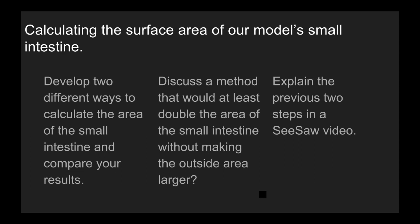Then discuss with your group a method that would at least double the area of the small intestine — in other words, how do you get the inside of the small intestine bigger without making the outside bigger, without growing more small intestine? You're going to take those insights and explain them in a Seesaw video; the link is on Classroom. Only one person in your group needs to submit the video, and the rest of you can mark it as done. At the end of the period on Tuesday, we'll share out what we've got.